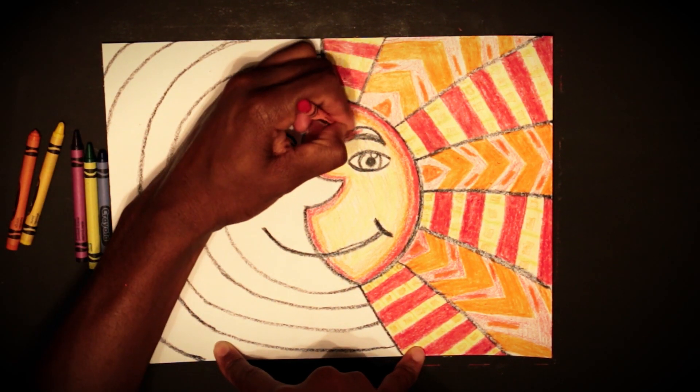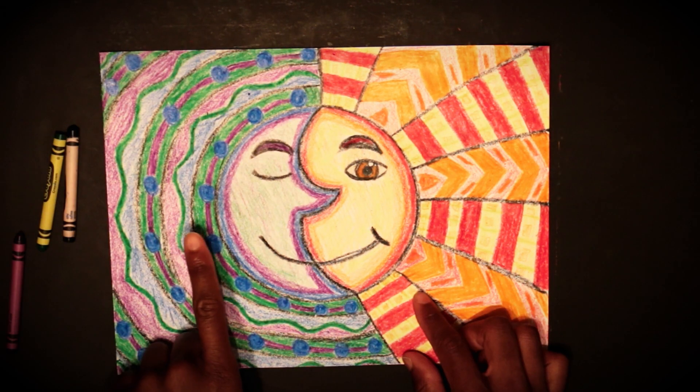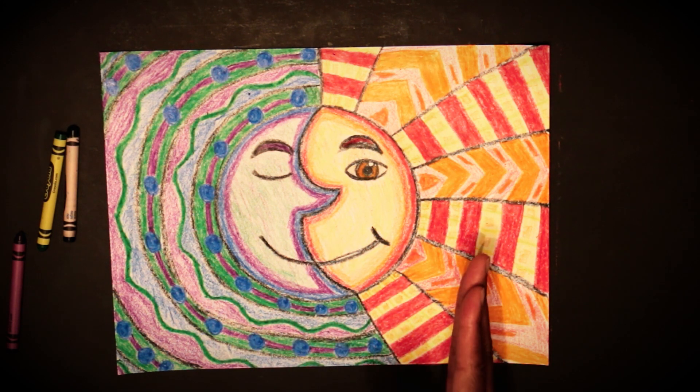So make sure you fill in all the white space when you color them in. Once you have all the warm colors colored in for your sun and the sun rays, you're going to do the same thing for the cool side with the moon. So that way you'll have warm and cool colors established.